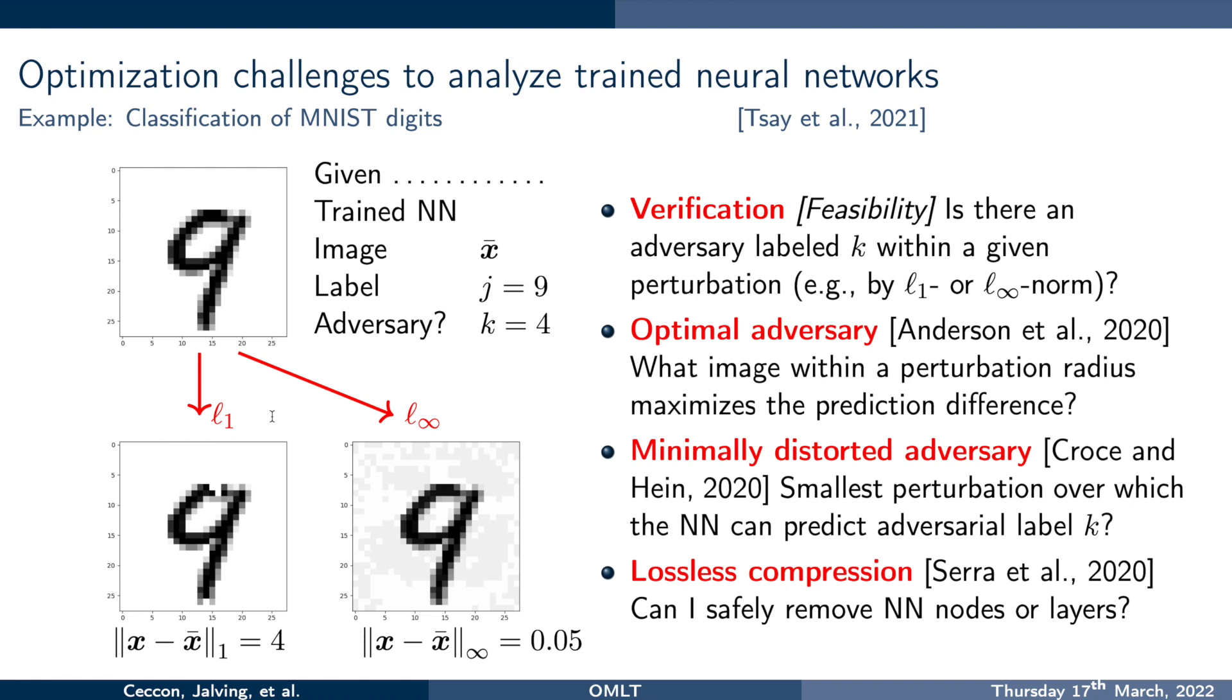So there's lots of optimization problems in artificial intelligence that are somehow related to these ideas I just mentioned. The first is actually not an optimization problem, it's a feasibility problem, but often in the literature it's written down to be solved by an optimization solver, because there are quite a number of very good optimization solvers. This is a verification problem, and what it asks is, is there an adversary labeled k? So is there a 4 within a given perturbation? So you set the distance metric, say an L1 norm or an L infinity norm, and you set the given perturbation.